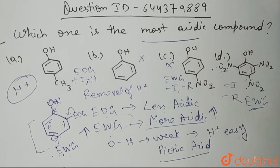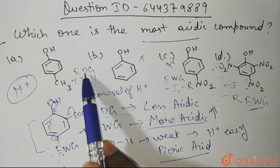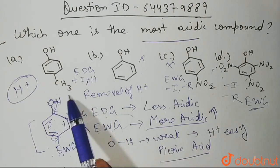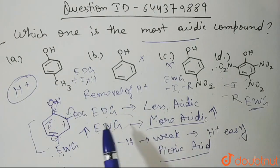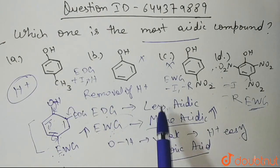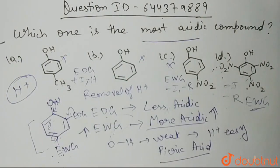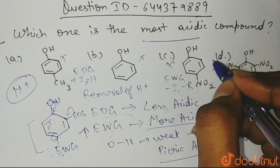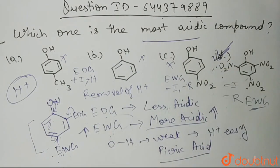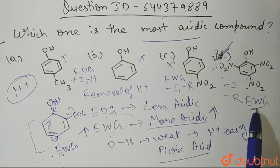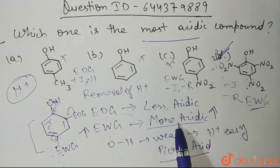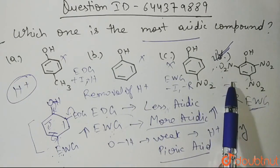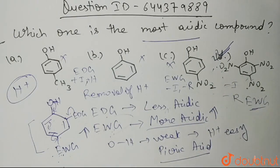So option C is not the answer. Option B (phenol with no substitution) is not the answer. Option A has a methyl group — an electron donating group — which makes phenol less acidic, so it is also not the answer. Therefore, the answer is D. That is the most acidic compound because 3 nitro groups are present, all of them are electron withdrawing groups, and more electron withdrawing groups make the compound more acidic. I hope you understood. Thank you so much.